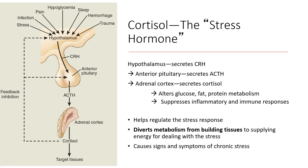Cortisol is generally considered to be the stress hormone and is regulated through the hypothalamic-pituitary-adrenal axis. A number of conditions can cause the release of cortisol, including stressors, pain, infection, hemorrhage, trauma, physiologic injury, surgery, changes in sleep, and changes in blood sugar. These can all signal the release of corticotropin-releasing hormone from the hypothalamus. Corticotropin-releasing hormone then travels to the anterior pituitary, signaling the release of adrenocorticotropic hormone, which then travels to the adrenal cortex, signaling the release of cortisol.